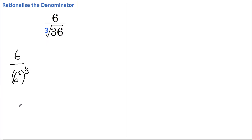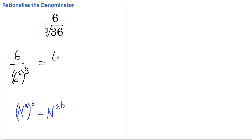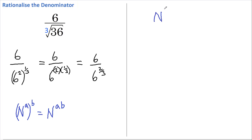Now there's a rule that says if we have a number raised to a power, and that's all raised to another power, then we can rewrite that as that number raised to those two powers multiplied together. Therefore we can rewrite this as 6 divided by 6 to the power of 2 times one third, which equals 6 divided by 6 to the two thirds.